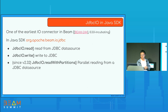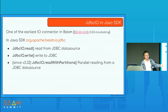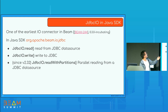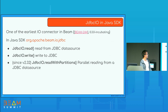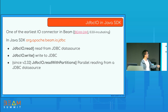JDBC IO is one of the earliest IO connectors in Beam, dating back to when Beam was an incubating project of Apache, about seven years ago. It has a three-digit issue number. It's in the io-jdbc module in Java SDK and provides a PTransform for read and one for write. More recently, in 2.32, a community contributor added read with partitions, which achieves parallel reading from a JDBC database. Before that, the reader was really just a single thread and did not scale well.